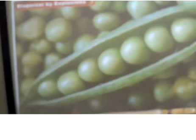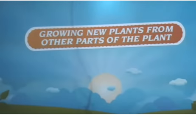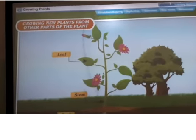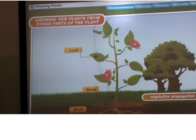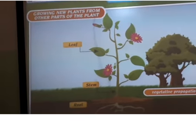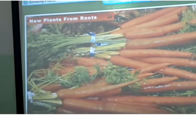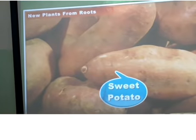So this is the dispersal of seeds by different methods. New plants from other parts of the plant. New plants can also grow from roots, stems, and leaves. This method of growing a plant is called vegetative propagation. Roots of some plants such as carrot, beetroot, radish, turnip, and sweet potato can produce new plants.